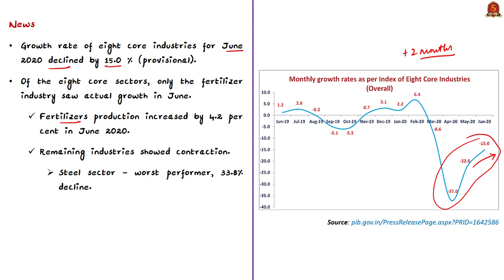Fertilizer production increased by about 4.2% compared to June 2019, though this growth rate is lower than the 7.5% reported in May 2020. However, it reflects positive outlook in the agriculture sector where normal monsoon is leading to expectations of a bumper kharif crop. The remaining industries showed contraction, with the steel sector being the worst performer at a 33.8% decline. From March 2020 there is a decline: minus 8.6% in March, minus 37% in April, minus 22% in May, and minus 15% in June.